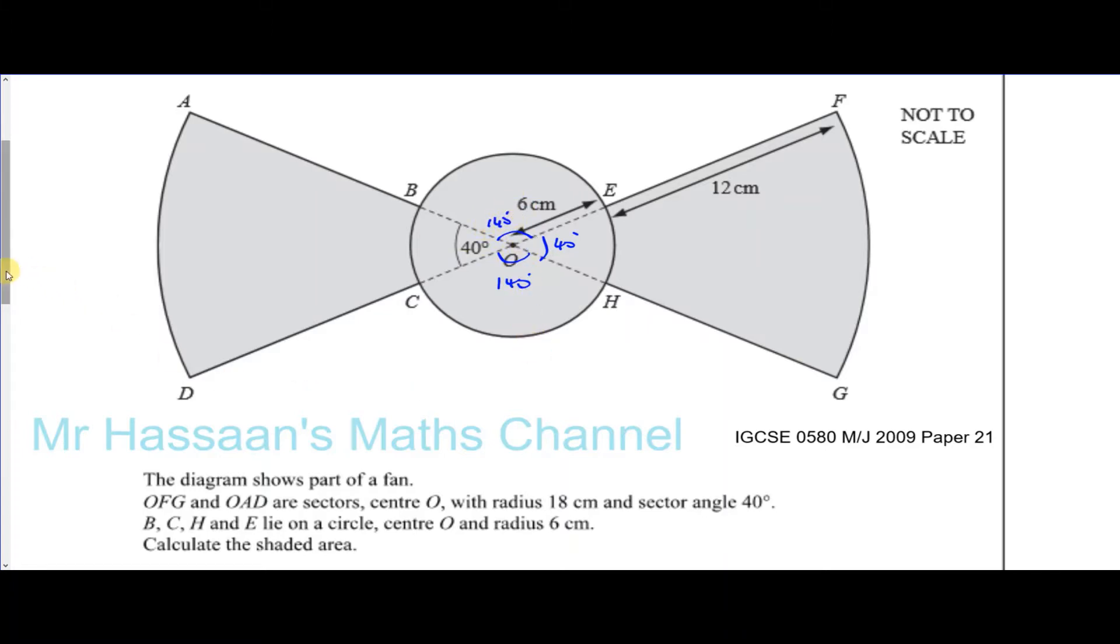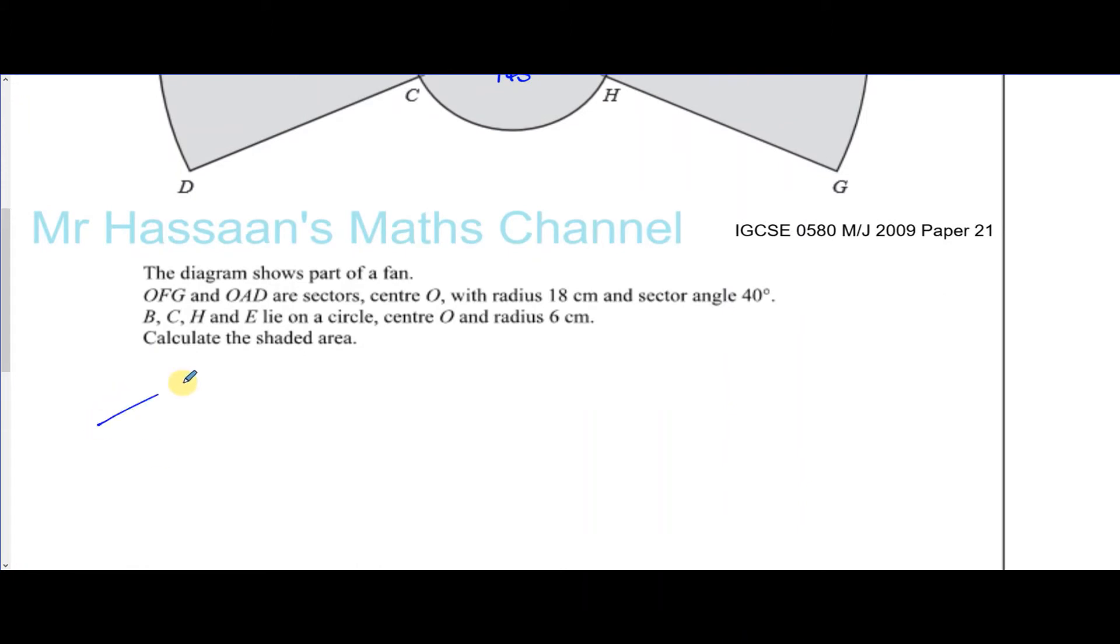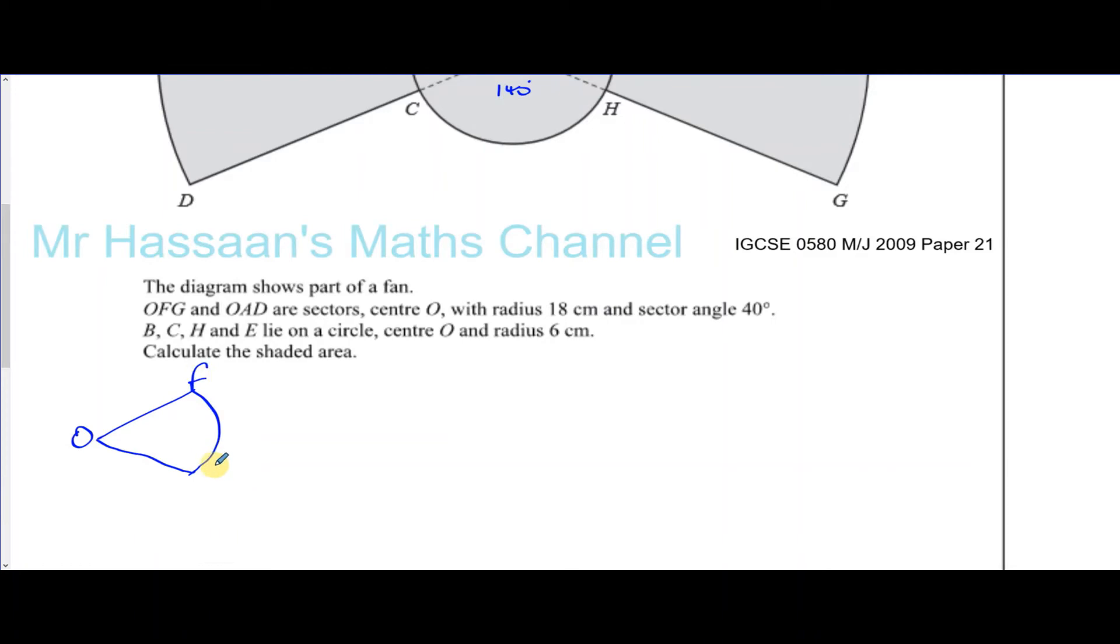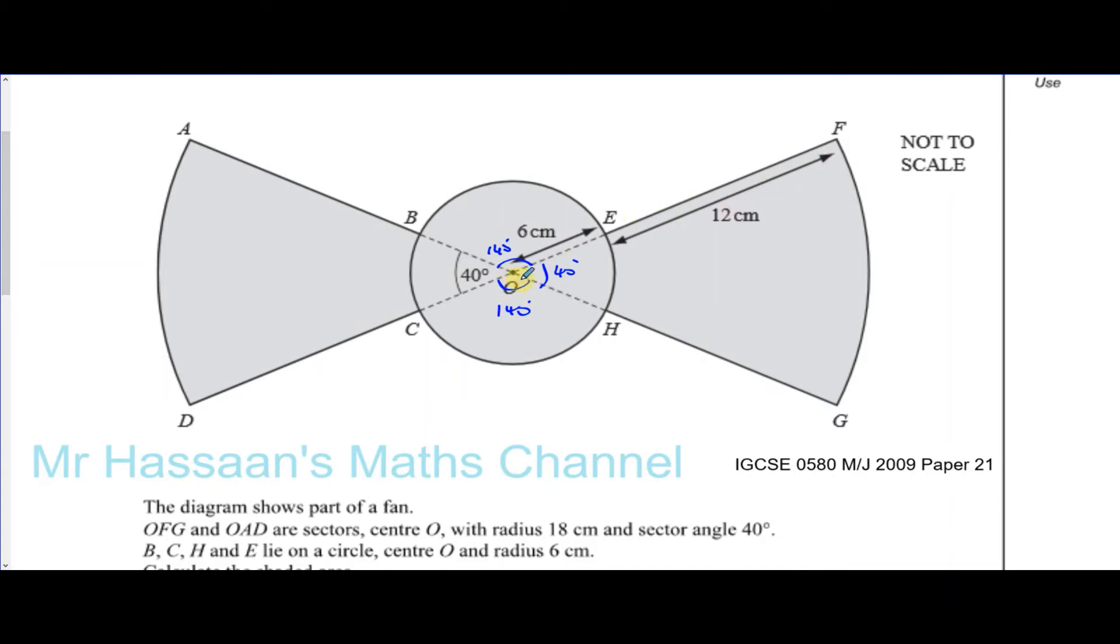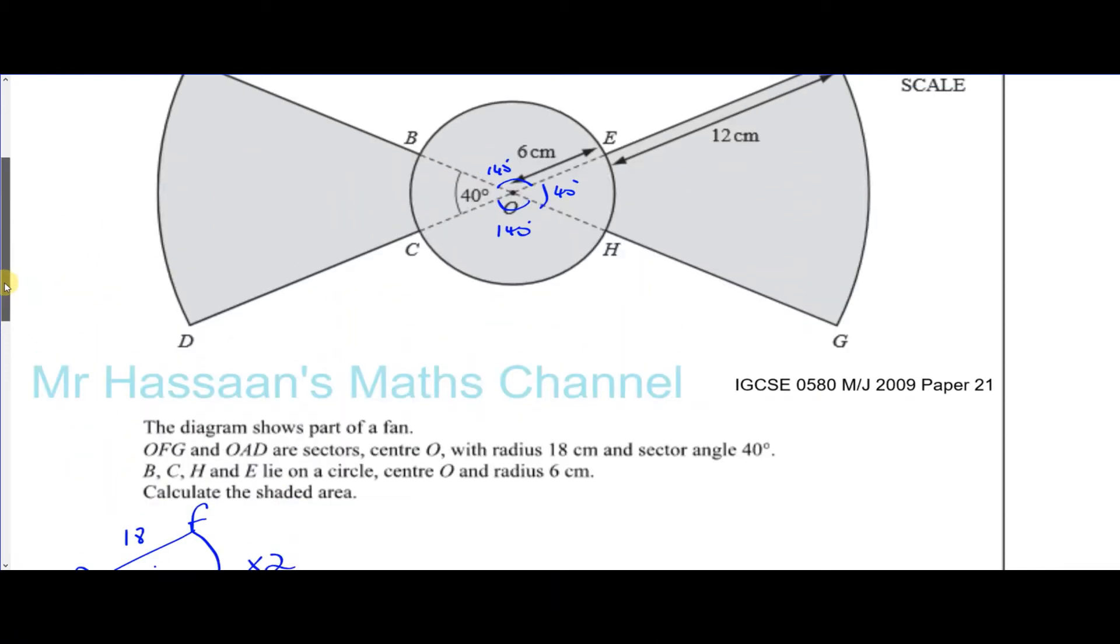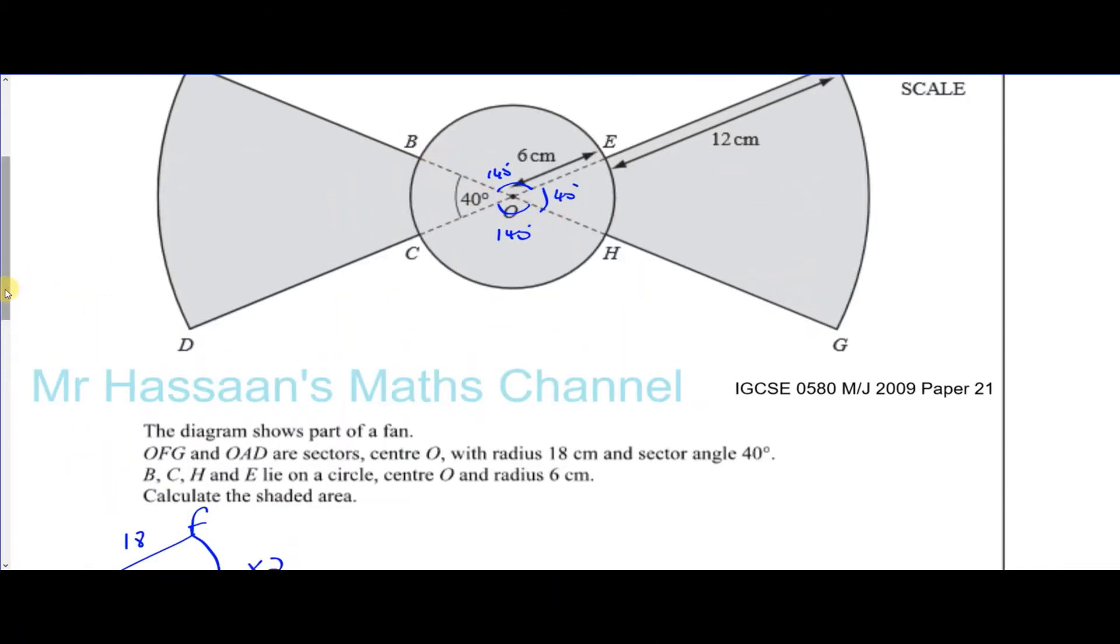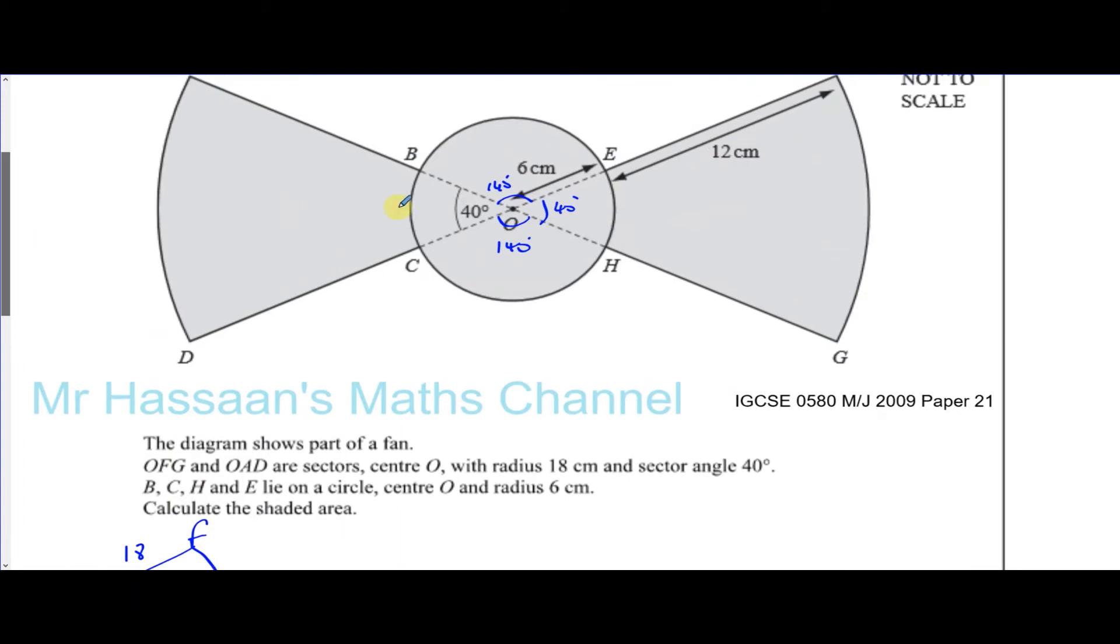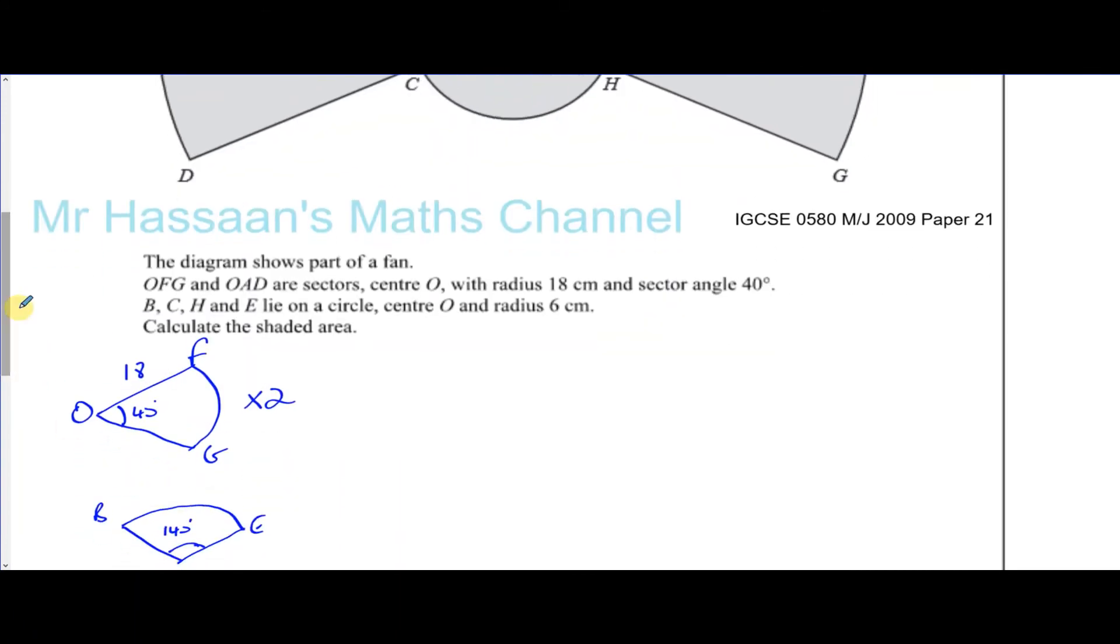What I would do is find the area of the two big sectors. Let's take OFG—that's 40 degrees, and from O to F is 18 centimeters. We have two of these. We also have two of these sectors which we can call OBE.